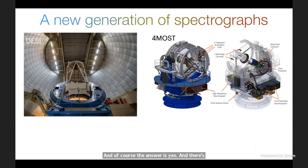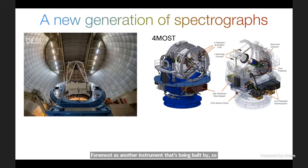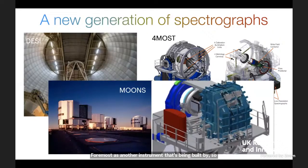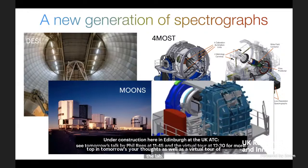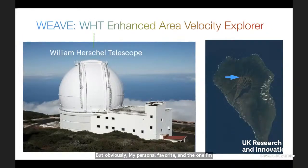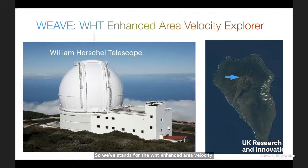There's a huge number of projects looking into robotic fiber placement. DESI is one that's recently started in the US. 4MOST is another instrument being built by ESO for the Southern Hemisphere. There's also MOONS, being built for the Very Large Telescope in Chile, which is under construction here in Edinburgh at the UK ATC. But my personal favorite is WEAVE — the WHT Enhanced Area Velocity Explorer — where WHT stands for the William Herschel Telescope in La Palma, a 4.2 meter optical telescope run by the Isaac Newton Group of Telescopes.